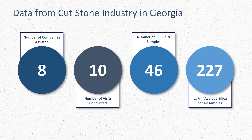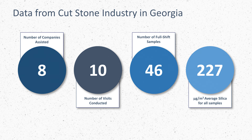Now let's review some objective data that consultants at the Georgia Tech OSHA consultation program collected from 2017 to 2021. We reviewed this information during Lesson 2, but now let's look at it from the perspective of complying with the OSHA silica standard. During this time, they assisted eight different companies that fabricate cut stone for the countertop industry. A total of 10 visits were conducted where monitoring was performed, collecting 46 full-shift samples. Employees were fabricating a wide range of countertops, including engineered stone or quartz countertops, and the type of stone fabricated varied day-to-day. The average amount of silica employees were exposed to was 227 micrograms per cubic meter — 4.5 times the OSHA permissible exposure limit and over nine times the action level.